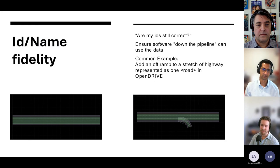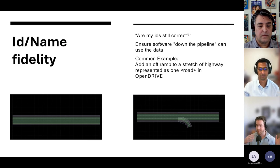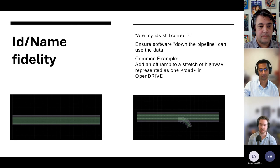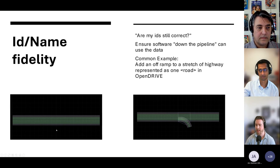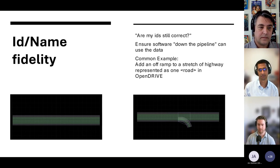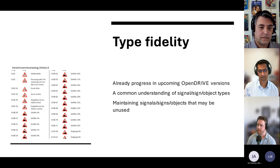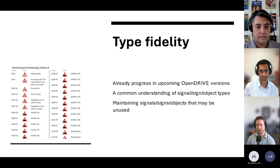Pretty much equally as important to geometric fidelity is name and ID fidelity. It's required for everything in simulation — making sure IDs stay correct throughout the pipeline ensures that software later in the pipeline can still access and use the same information that's been present all the way from measured data down. A common example where this is tricky in current OpenDrive is adding an off-ramp to a stretch of highway: starting with just one road with one ID suddenly becomes four roads with four different IDs, and it's difficult to correlate this with existing scenarios without modifying them as well.